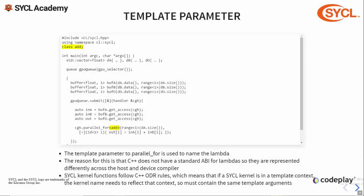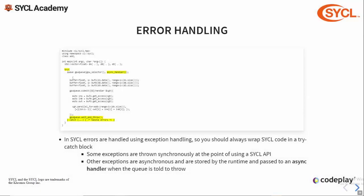You'll probably notice that the parallel_for function also takes a template parameter. This is used to name the lambda — since C++ does not have a standard ABI for lambdas, this is required to allow the host and device compilers to communicate. SYCL kernel names also follow C++ ODR rules, so if your kernel is defined in a template context the name too must be templated. Finally, an important note: the SYCL runtime manages errors by throwing exceptions. Some of these are thrown synchronously and some asynchronously. In order to catch these you must wrap the SYCL application code in a try-catch block and provide an async handler to the queue — but more on this in the next lecture.